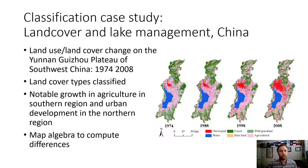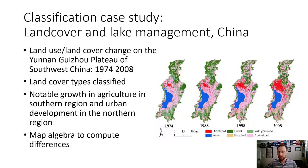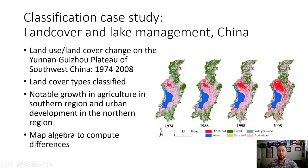A classification case study: a land use/land cover change map from the Yunnan-Weizhou Plateau in Southwest China, looking at differences between 1974 and 2008, with images from 1974, 1988, 1998, and 2008. Notable agricultural growth is visible in the southern region, and there is a massive growth of the urban classification in the north from 1974 to 2008. Having four classified images, we can use map algebra — subtracting developed from developed, agriculture from agriculture — to find the total difference over time.